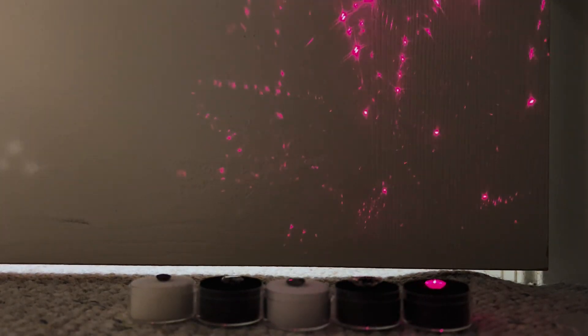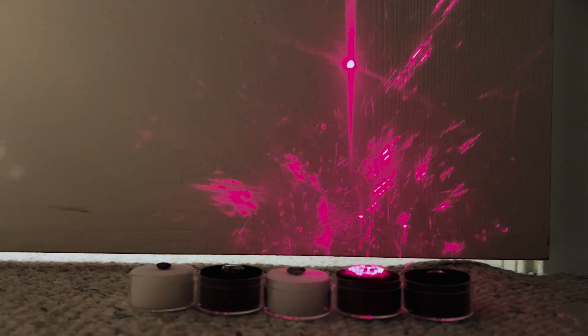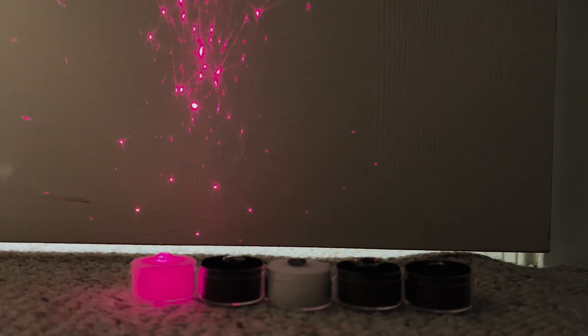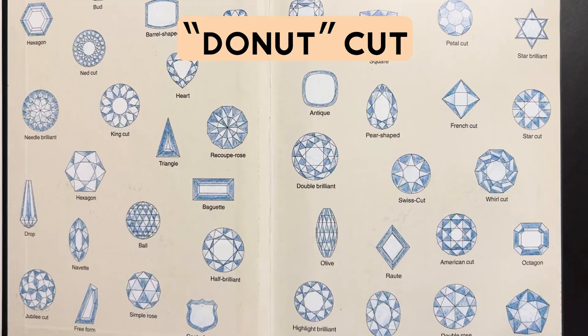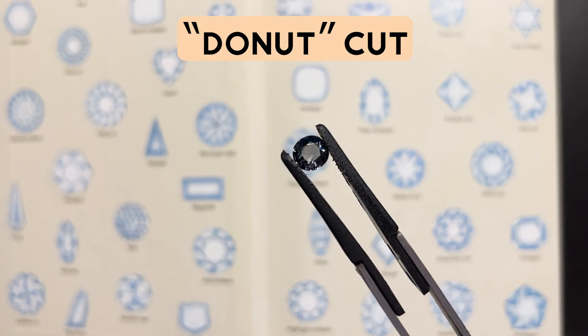The second property responsible for brilliance — these flashes of light in the stone — is simply the cut. Over time, lapidaries, people that cut stones, have figured out how to precisely cut a stone so that it reflects back the maximum amount of light. If you're a little bit off with that cut, you can get this 'donutting' effect where the light actually just passes straight through and exits out the bottom of the stone, so you can see through it.